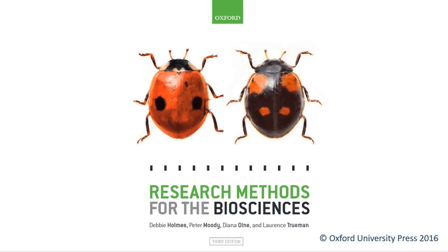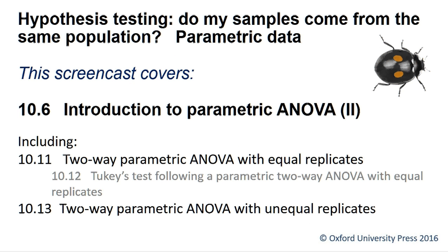Hello, welcome to another Research Methods for the Biosciences screencast for SPSS. This screencast covers section 10.6, Introduction to Parametric ANOVA, including section 10.11, two-way parametric ANOVA with equal replicates, section 10.12, Tukey's test following a parametric two-way ANOVA, and section 10.13, two-way parametric ANOVA with unequal replicates.